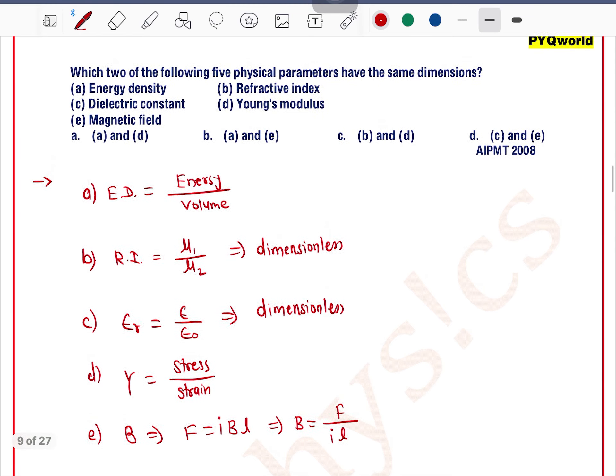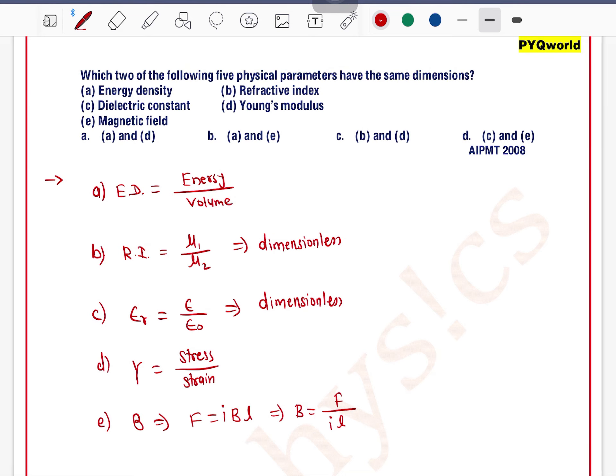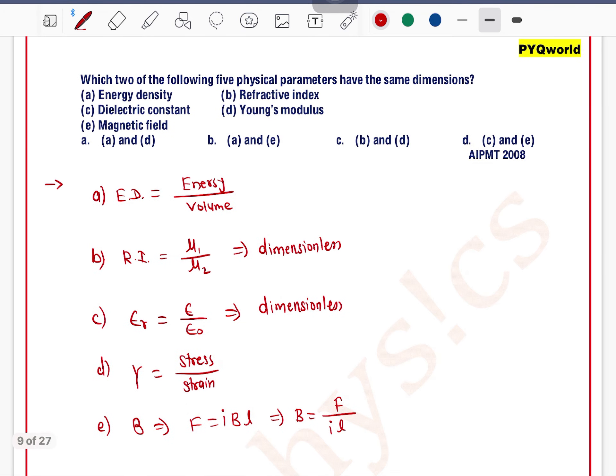So B and C are dimensionless quantities, meaning both are not having dimensions at all. Now we'll solve for all the options. What is the dimension of energy density?